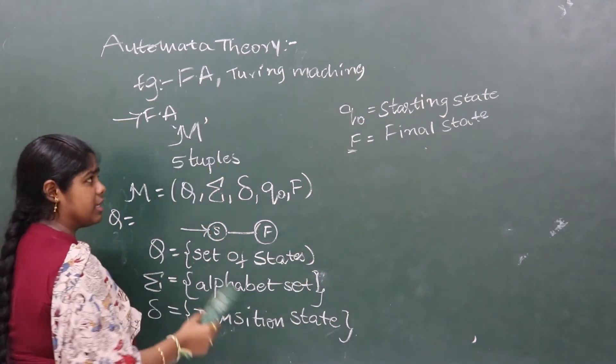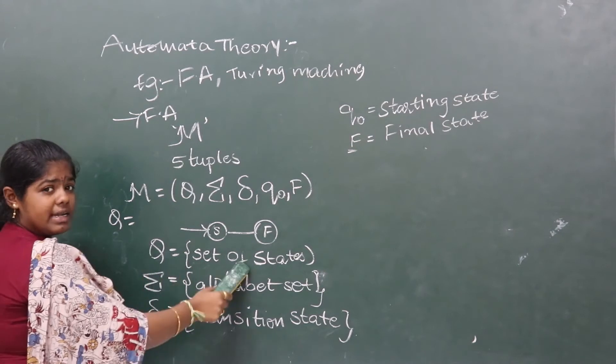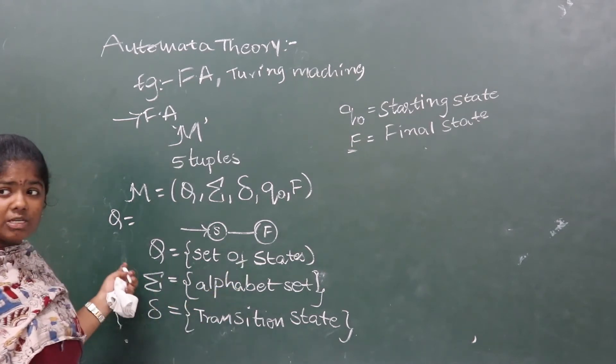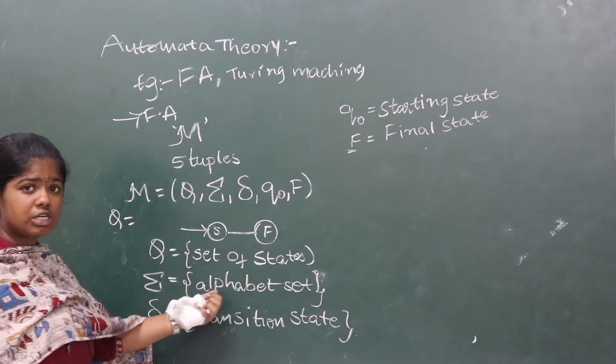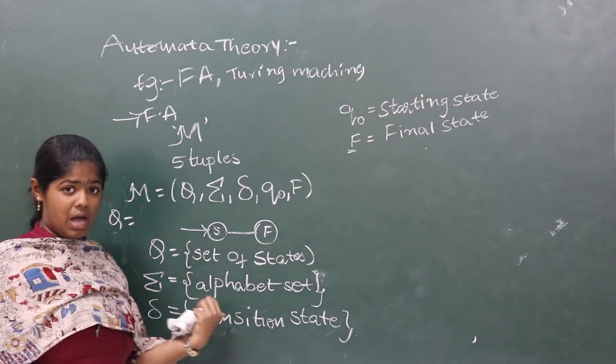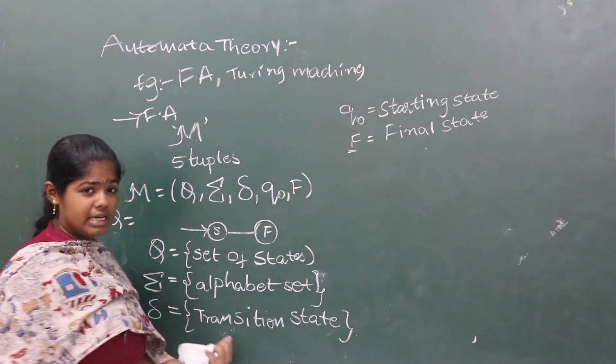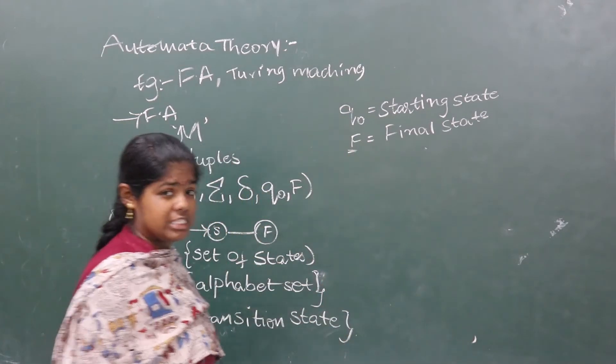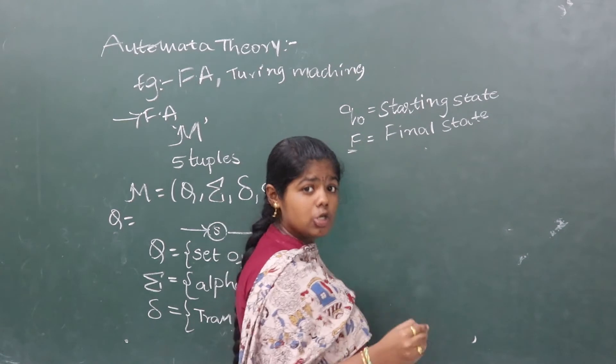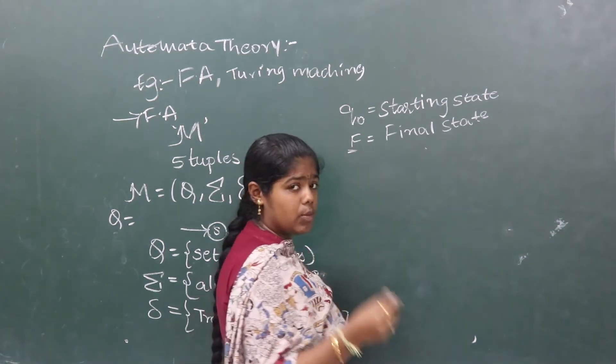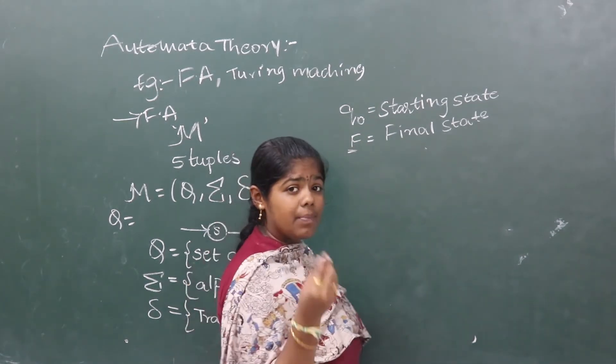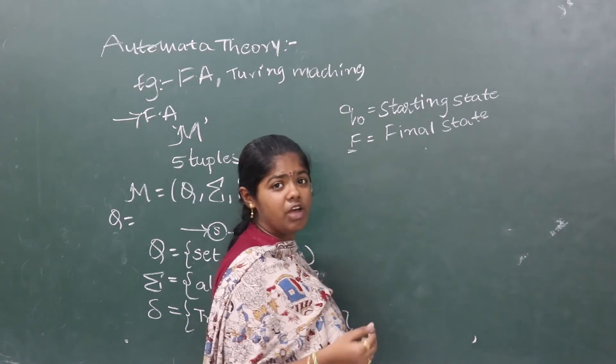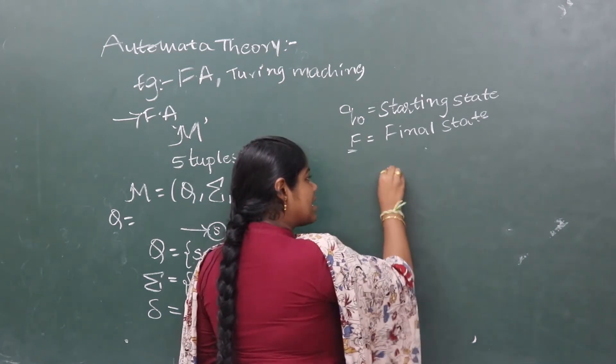Five tuples we are discussing in this finite automata. Q is set of states. In the machine, the states are discussed. Set of states. Sigma is the input alphabet set. Delta is the transition state. Q is the starting state. And F is the final state. I think in finite automata, we need to know some three more apparatus.